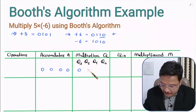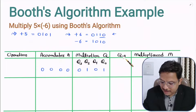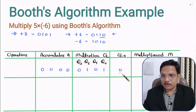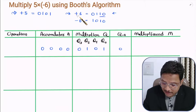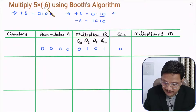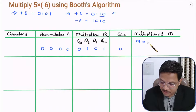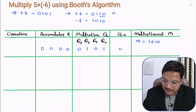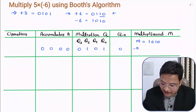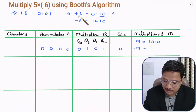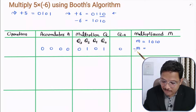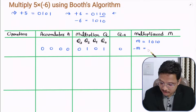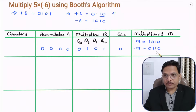Q minus 1 initially you need to consider as 0. When you write the multiplicand, you need to mention both M and minus M. The multiplicand is minus 6, so M is 1, 0, 1, 0. And minus M is plus 6, so that will be 0, 1, 1, 0. This is how you initially mention the data.